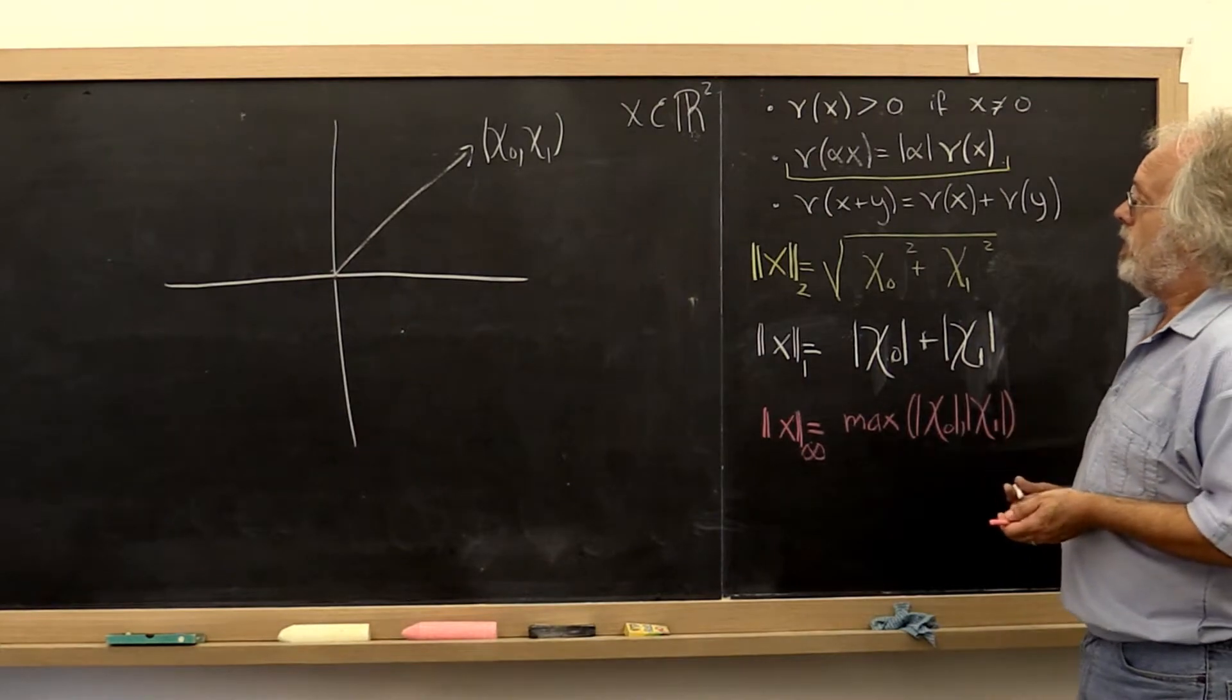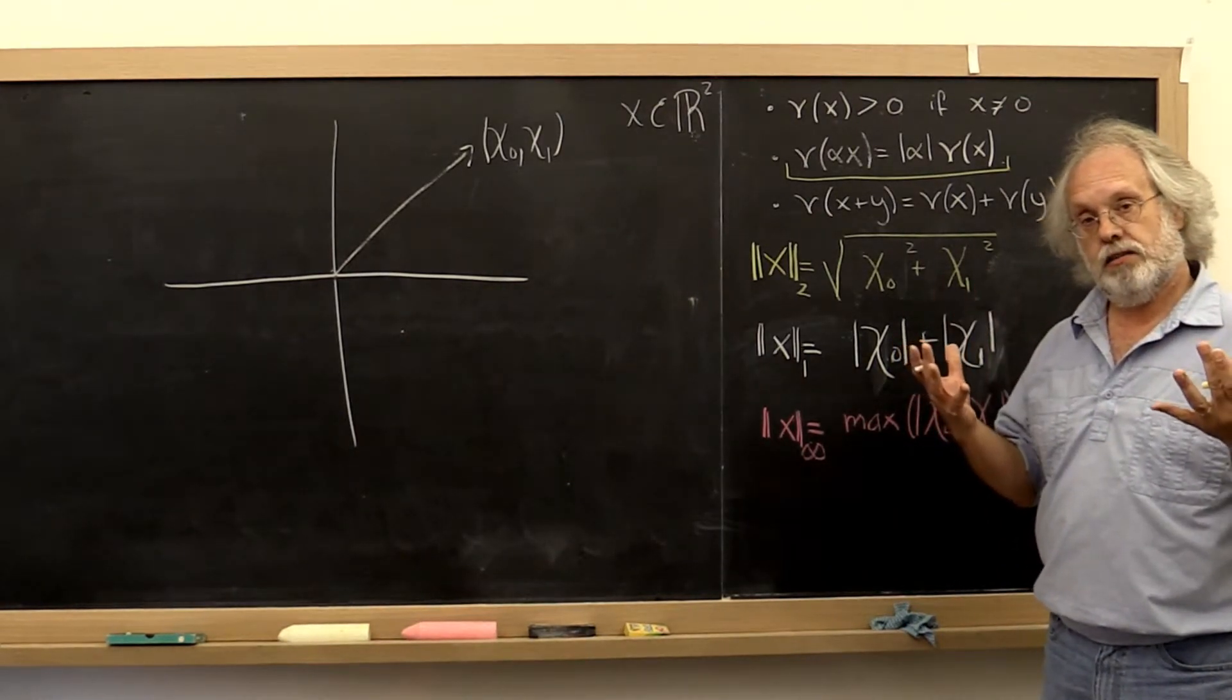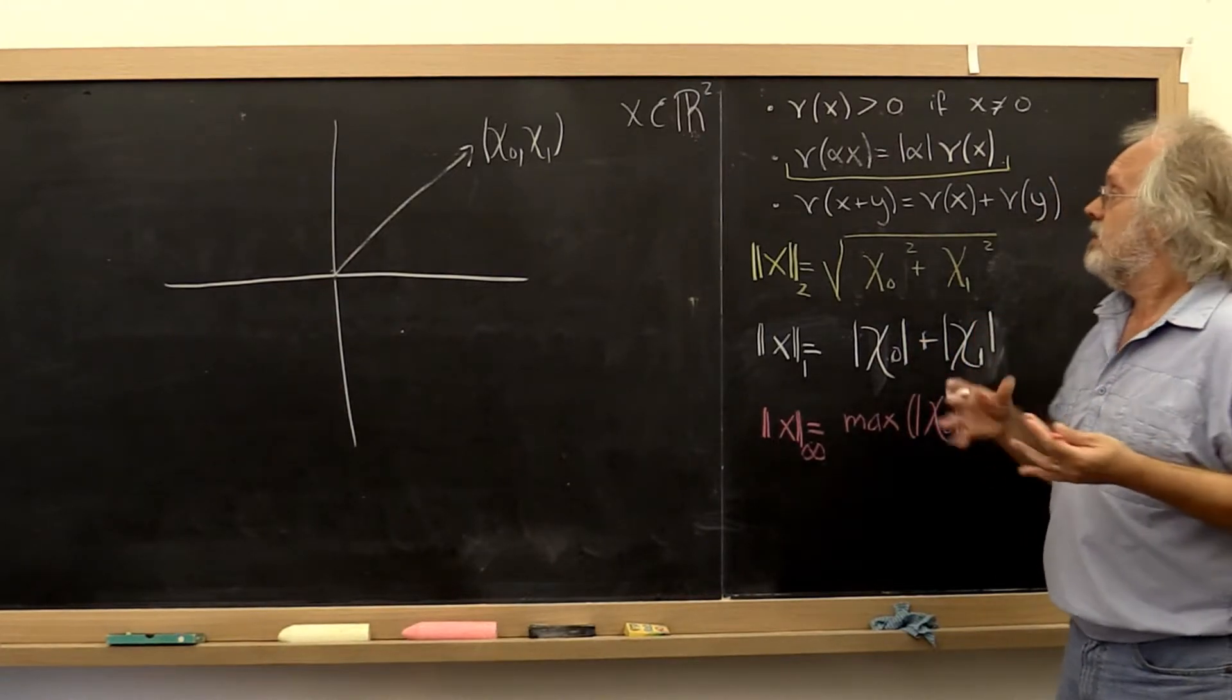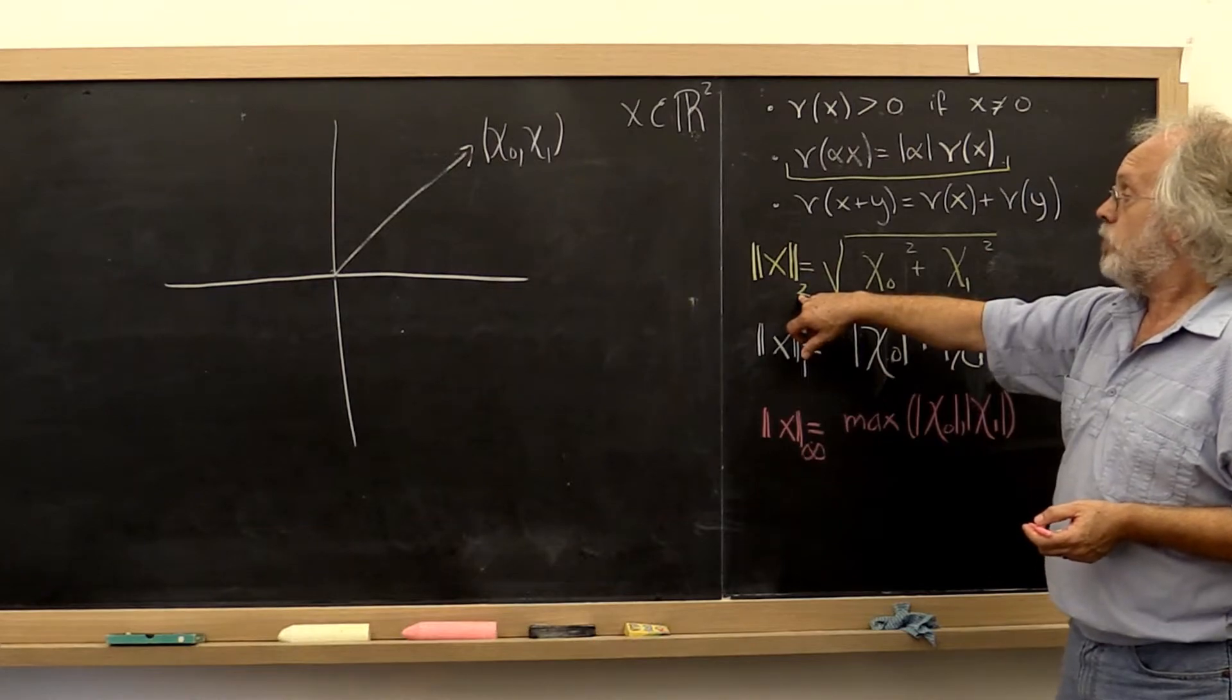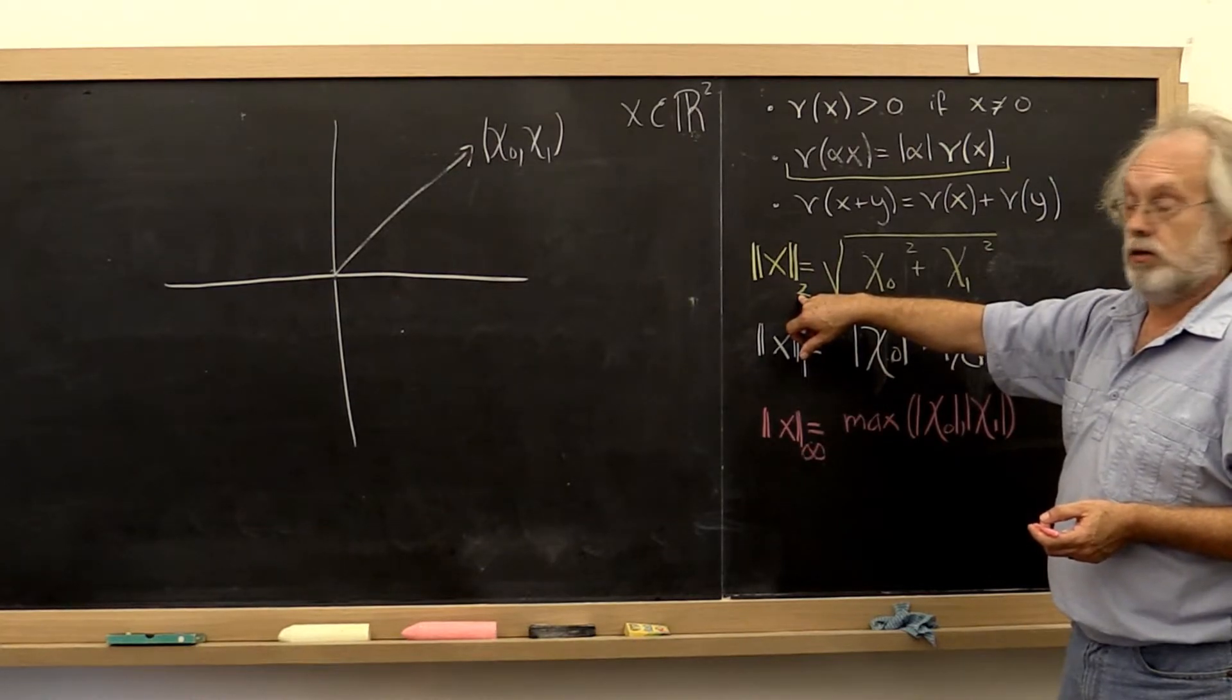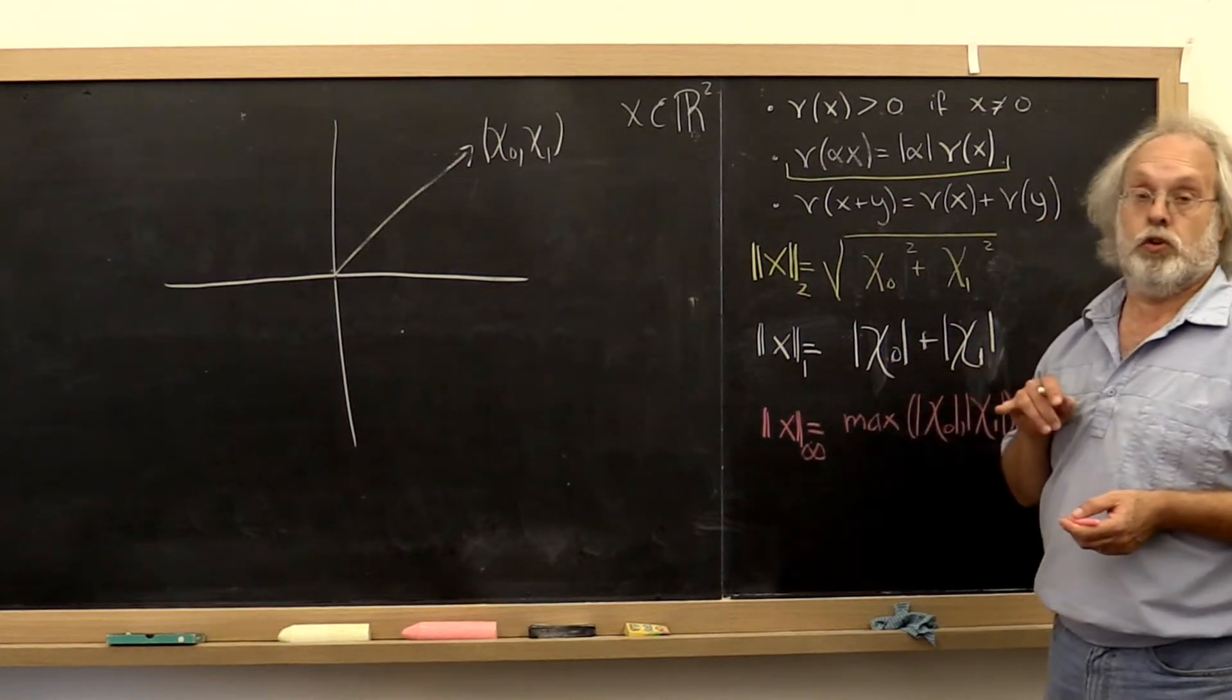So it's important to be able to visualize what the set of all vectors with two norm equal to 1 looks like. Or one norm equal to 1. Or infinity norm equal to 1.